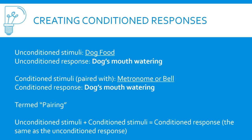Here are the technical terms. The unconditioned stimulus is the dog food, and the unconditioned response is the dog's mouth watering. The conditioned stimulus — what you pair it with — is the metronome or bell. The conditioned response is the same as the unconditioned response: the dog's mouth watering. The stimuli differ, but the responses are the same. The equation is: mix something unconditional with something conditional, and eventually you get the conditioned response.